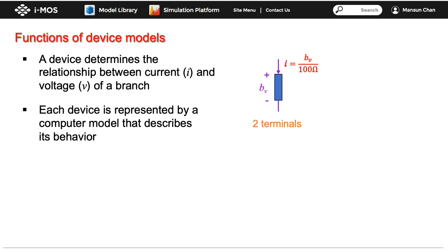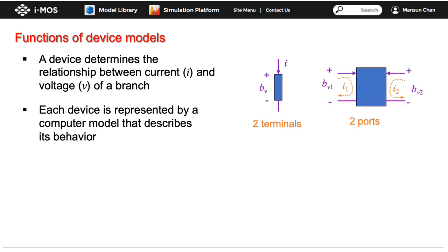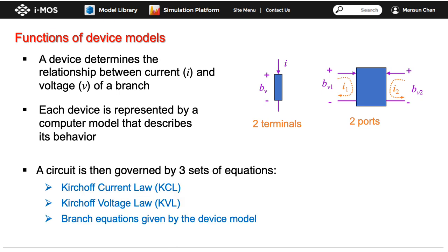A device can have more than two terminals. For example, it can be a two-port network that forms two different branches with two branch currents. When devices are connected together to form a circuit, it is governed by three sets of equations: Kirchhoff's Current Law (KCL), Kirchhoff's Voltage Law (KVL), and the branch equations that relate the current and voltage characteristics of the device.